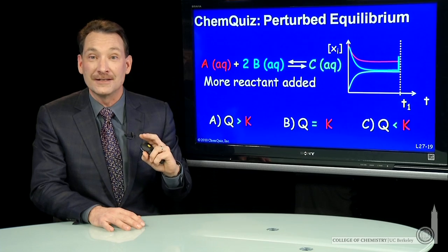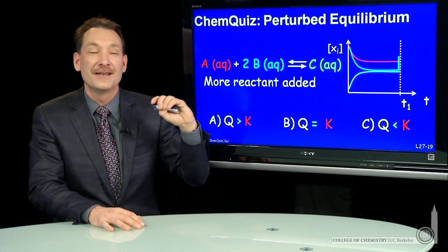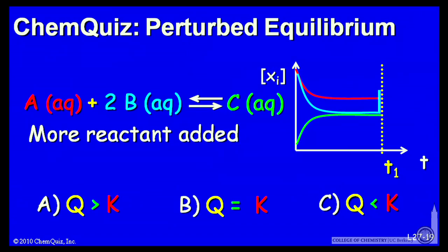B is a reactant. So if I increase the concentration of B in the reaction quotient, products over reactants, I'd be making the denominator, the reactants, bigger. That would make Q smaller than its equilibrium value.